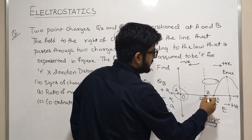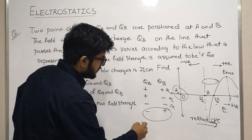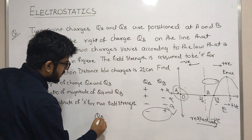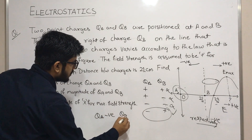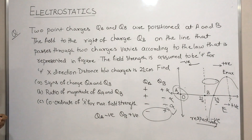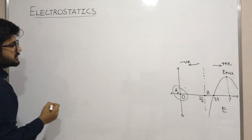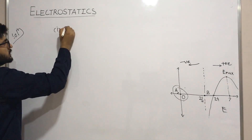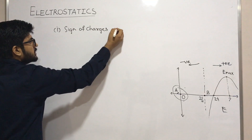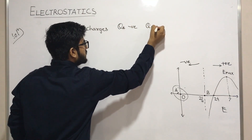If b is positive then electric field is positive, and if a is negative then electric field is negative, so we can accept it. Our answer will be qa is negative and qb is positive. Now let's copy the question and see the solution — we have found that qa is negative and qb is positive.